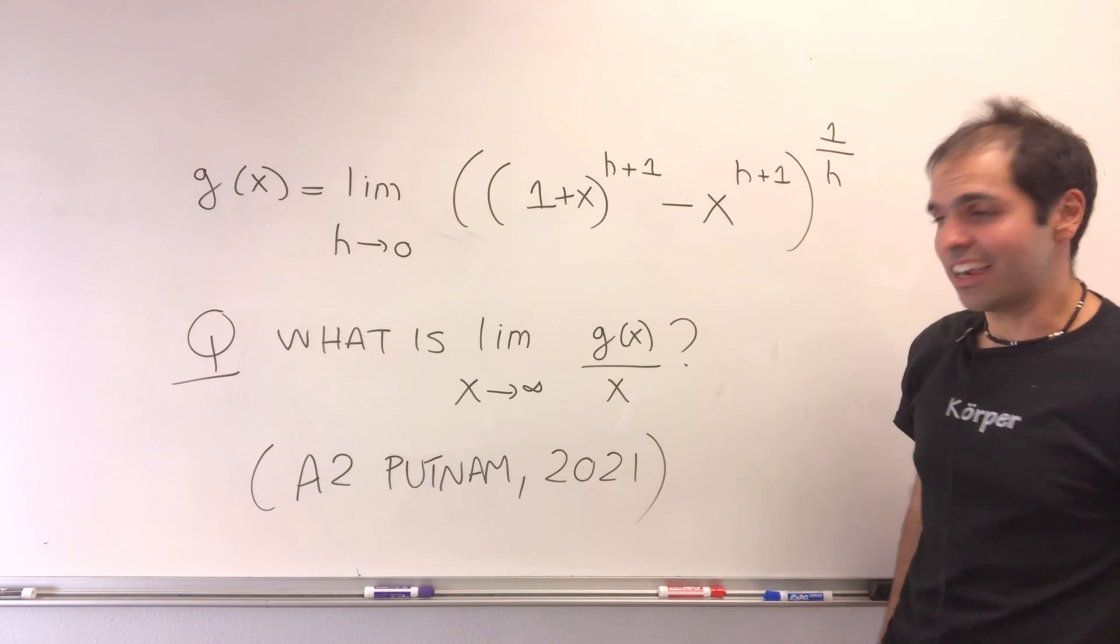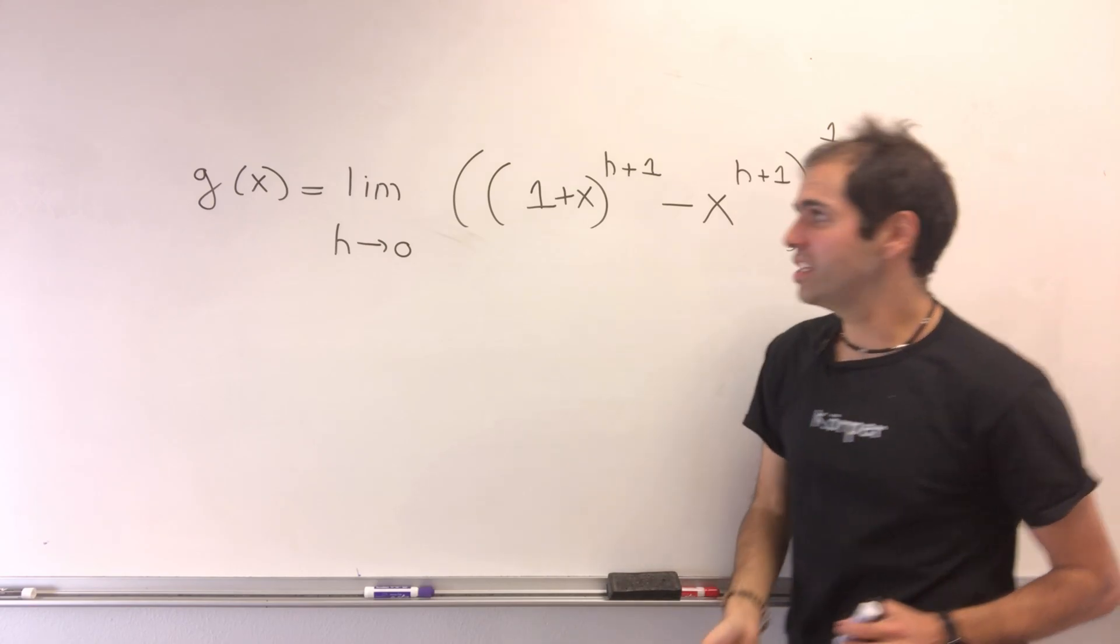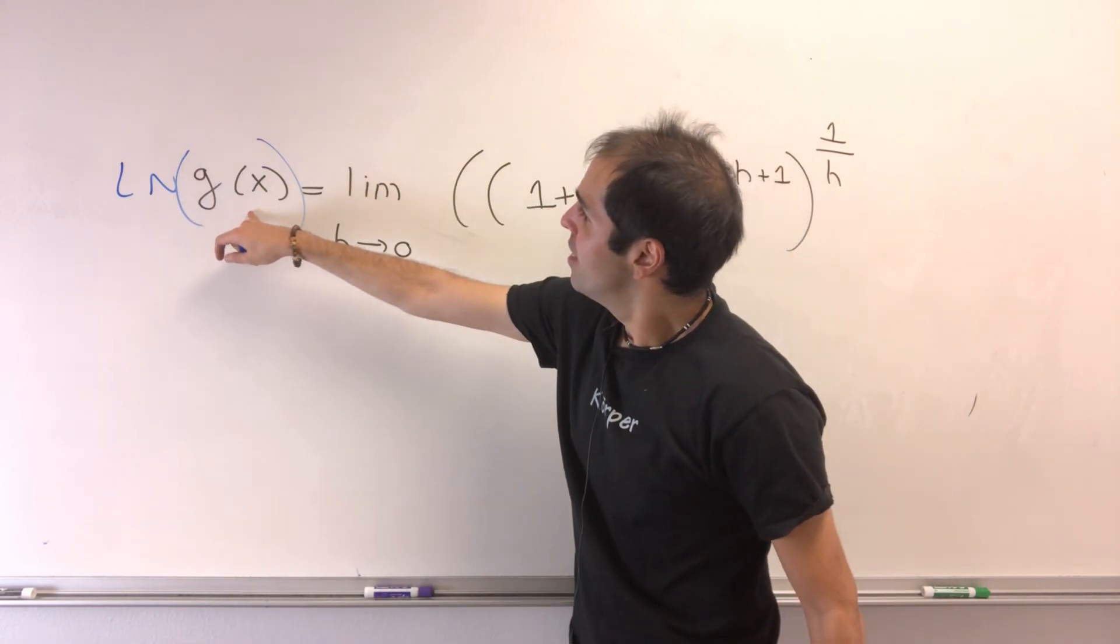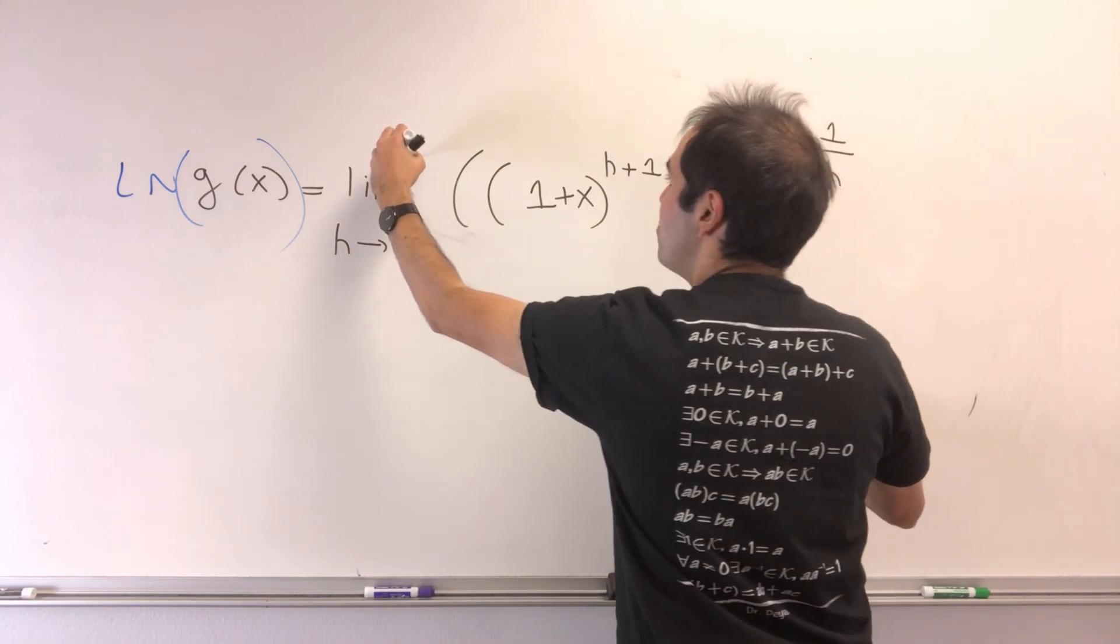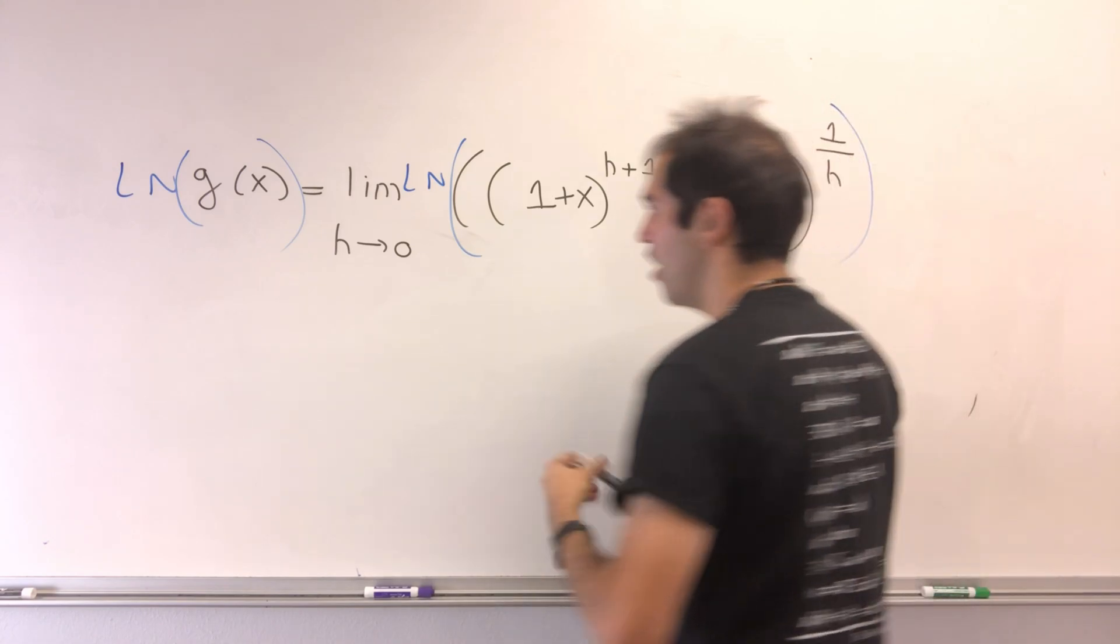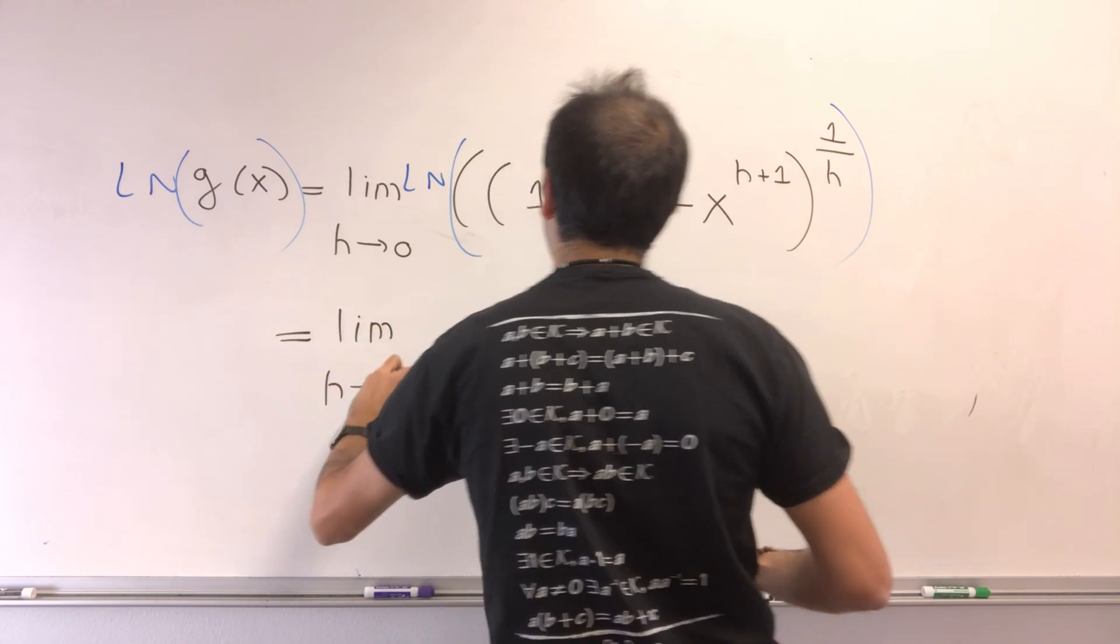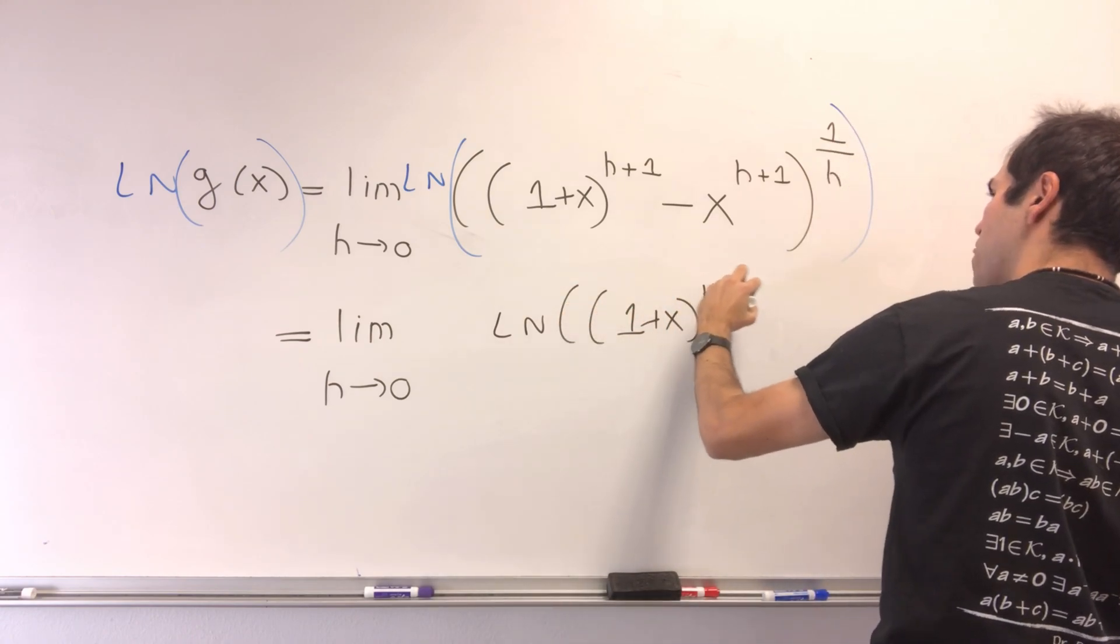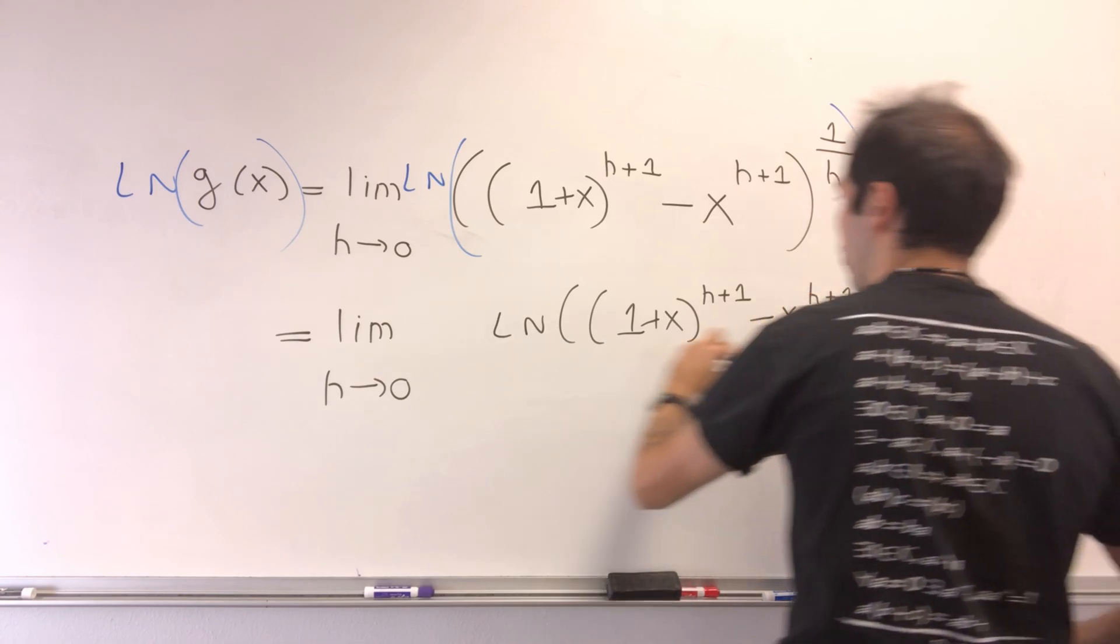Let's try to tackle it. Since g is just an exponent, let's destroy it by using ln. So ln destroys the exponents and becomes ln of g of x, ln of that limit, which we can put inside because ln is continuous. This becomes the limit as h goes to zero of ln of 1 plus x to the h plus 1 minus x to the h plus 1 over h.